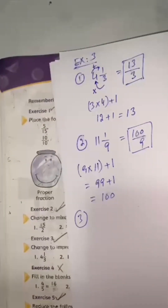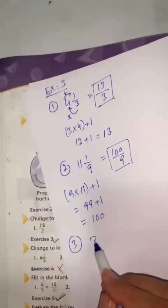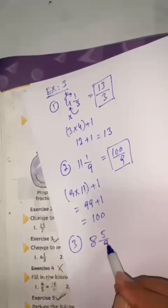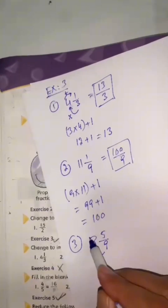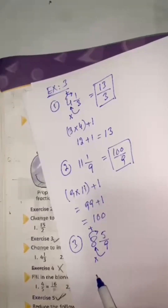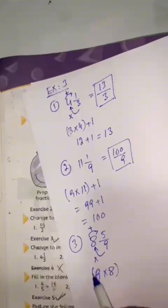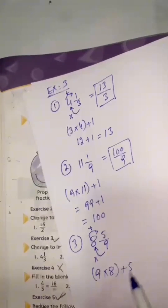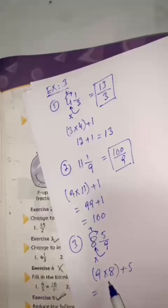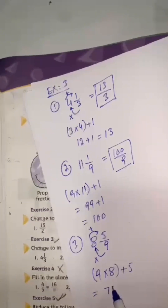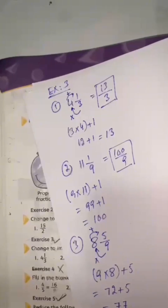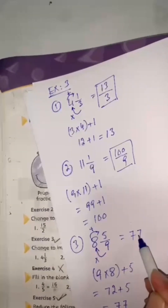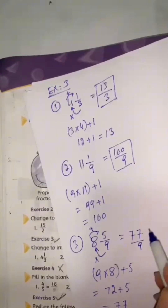Question number 3: 8 whole number 5 by 9. Again, multiply the denominator by the whole number and add the numerator. So 9 multiply by 8 plus 5: 9 eights are 72, plus 5 equals 77. So the answer is 77 divided by 9.